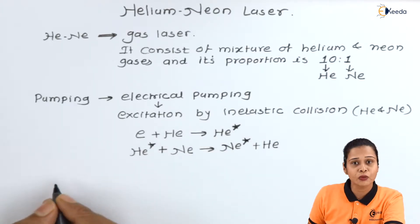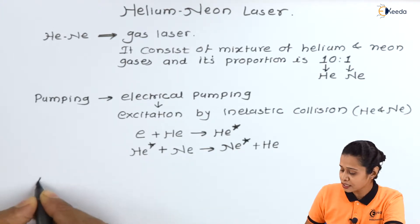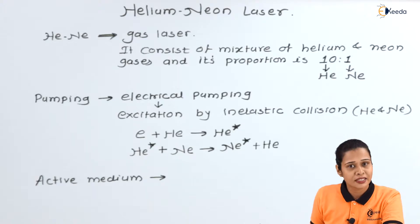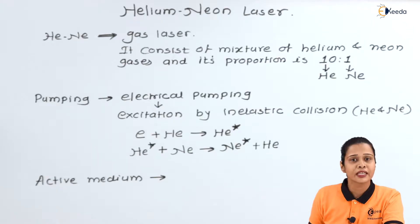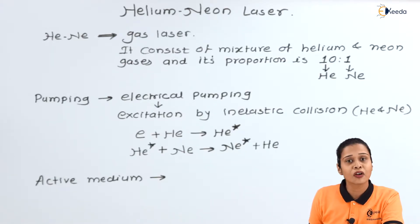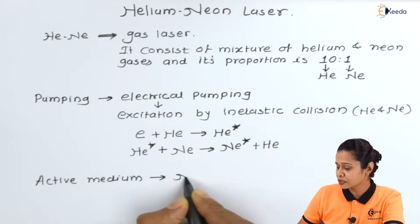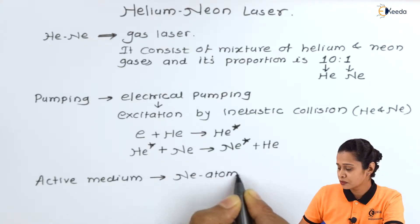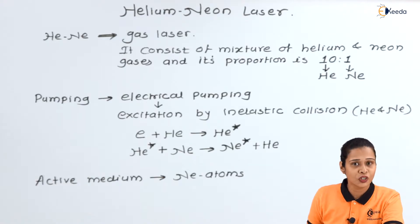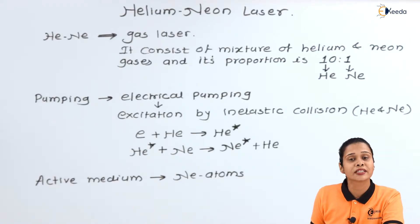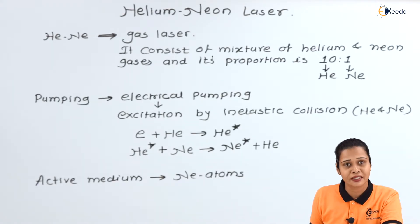The active medium in this Helium Neon laser is Neon. The active medium is the medium in which laser action takes place — because of that atom we get the laser action. In the case of Helium Neon laser, we have both Helium and Neon, but the active medium is the Neon atoms. Helium is only used to excite the Neon atom from the ground state to the excited state.